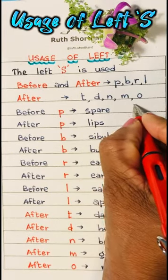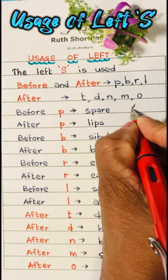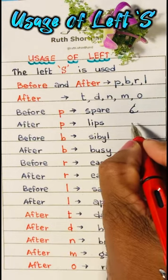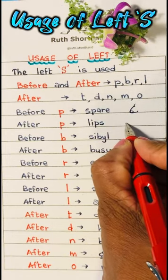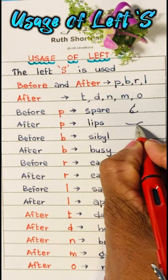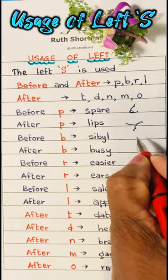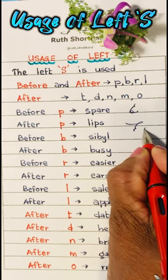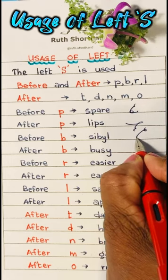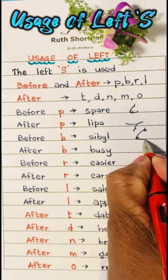Now we will see before P: spare. After P: lips. Before B: Sibyl.